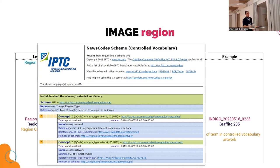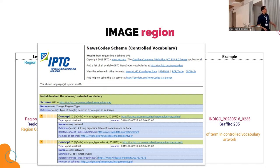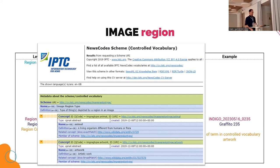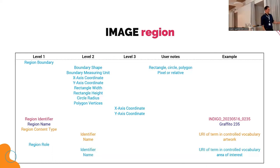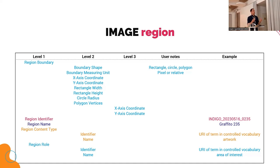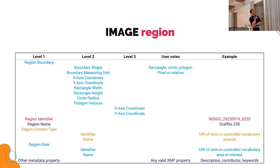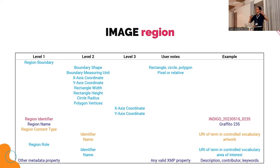There are two very important types attached to the region. One is the region content type — you have to define what type of content is in that region, coming from a controlled vocabulary. For instance, you can say what's in this region is artwork. The IPTC has a lot of controlled vocabularies, including a use code scheme, and concepts like animal or artwork — but there is still no concept of graffiti, which was a problem for us. Then there's also a region role, which says what is the role of these pixels in the bigger frame — is this an area of interest, or the main subject?